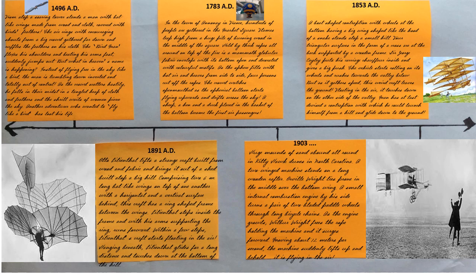1903 A.D. Huge mounds of sand abound all around in Kitty Hawk dunes in North Carolina. A two-wing machine stands on a long wooden rafter. Orville Wright lies prone in the middle over the bottom wing. A small internal combustion engine by its side turns a pair of two-bladed paddle wheels through long bicycle chains. As the engine growls, Wilbur Wright frees the rope holding the machine and it surges forward. Moving about 12 meters per second, the machine suddenly lifts up and, behold, it is flying in the air.